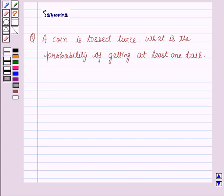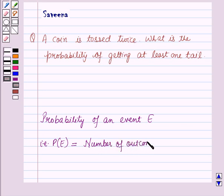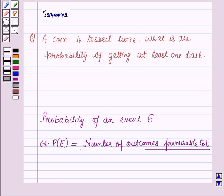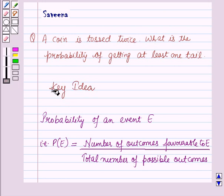Now before starting the solution of this question we should know our key result. The probability of an event E, that is P(E), is equal to the number of outcomes favorable to E, divided by the total number of possible outcomes. This result will work out as a key idea for solving this question.